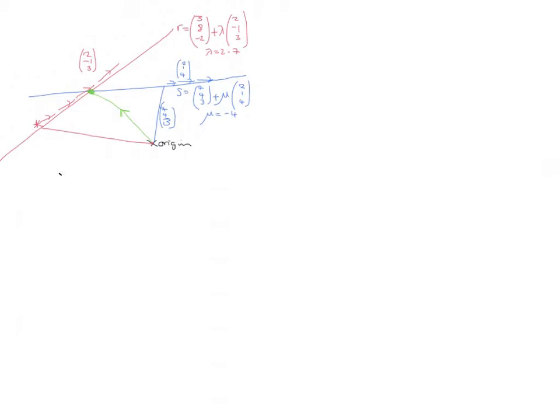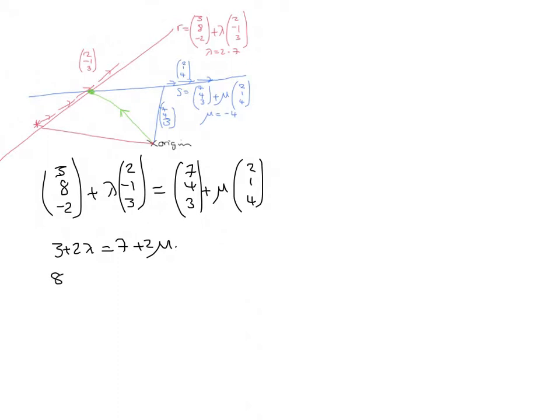I'm going to say line 1, (3, 8, -2), plus any amount I like of (2, -1, 3), needs to be equal to the blue line. (7, 4, 3), plus any amount, different amount probably, of (2, 1, 4). Let's take the top line equal to the top line, and the middle line equal to the middle line, and the bottom line equal to the bottom line. 3 + 2λ has to equal 7 + 2μ. 8 - λ has to equal 4 + μ, and -2 + 3λ has to equal 3 + 4μ.